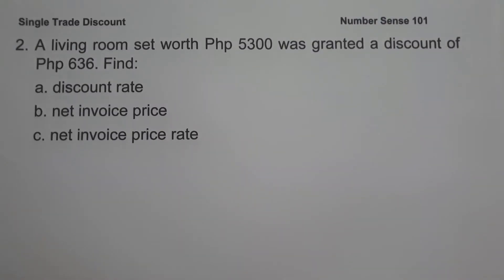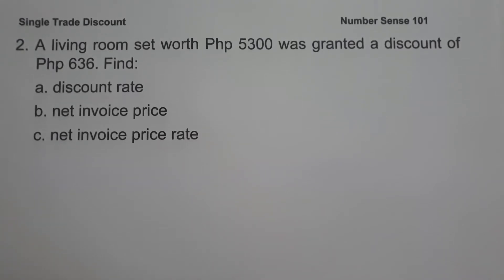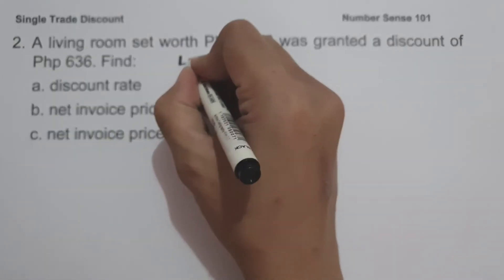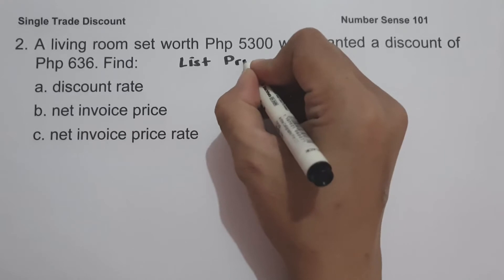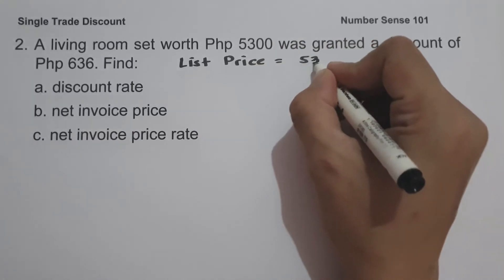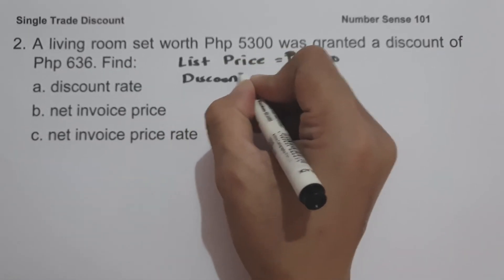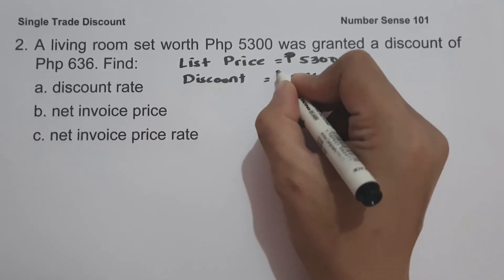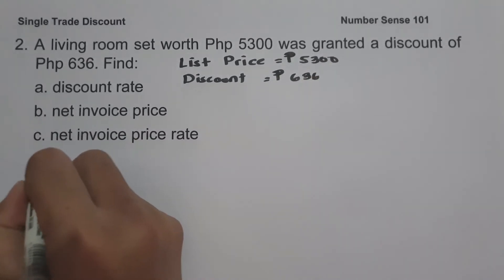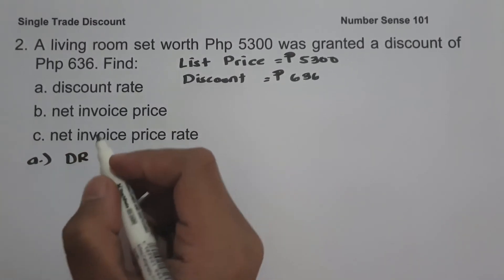Example number two: a living room set worth five thousand three hundred pesos was granted a discount of six hundred thirty-six pesos. Find: letter A, the discount rate; letter B, the net invoice price; and letter C, the net invoice price rate. To answer the following questions, let us identify our given. The list price is five thousand three hundred pesos and the discount is six hundred thirty-six pesos.